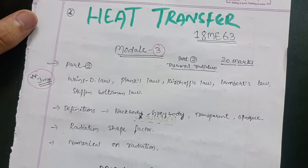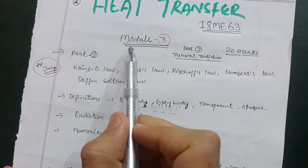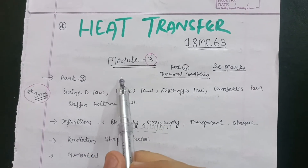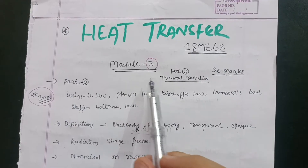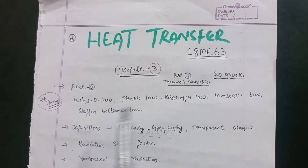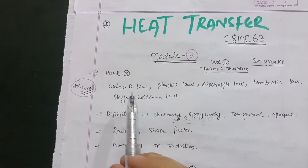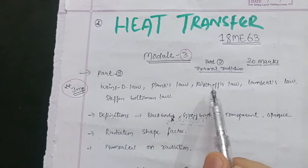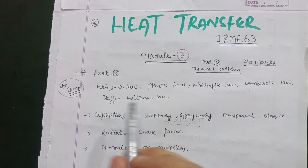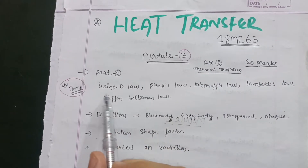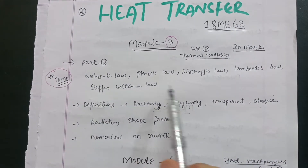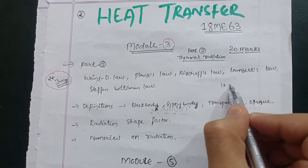First, go for Module 3, because it is an easier module. In Module 3 there are two parts: heat conduction and thermal radiation. Go for Part 2, that is thermal radiation, in which you have to cover topics like Wien's displacement law, Planck's law, Kirchhoff's law, Lambert's cosine law, and Stefan-Boltzmann law. This is one of the most important question types from thermal radiation, carrying 10 marks.